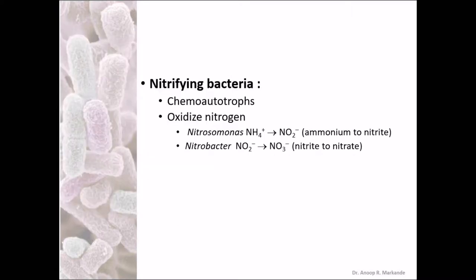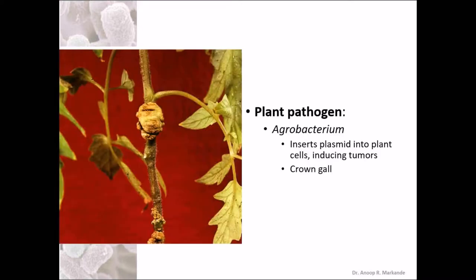Plant pathogens like Agrobacterium are known to insert a Ti plasmid — or tumor induction plasmid — into the plant cells, inducing tumors. These tumors are known as crown gall disease, as can be seen in the image showing crown gall disease on the tomato plant.